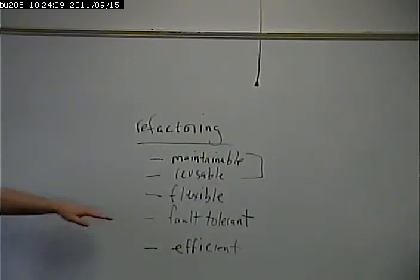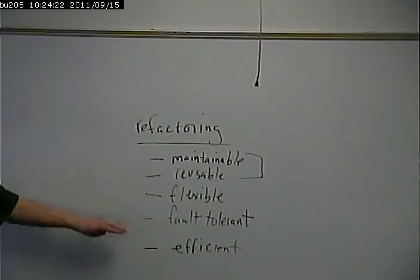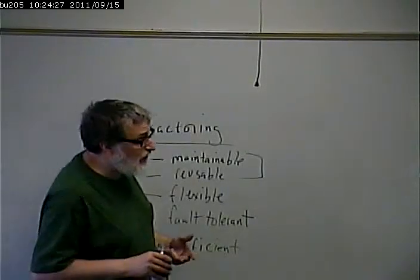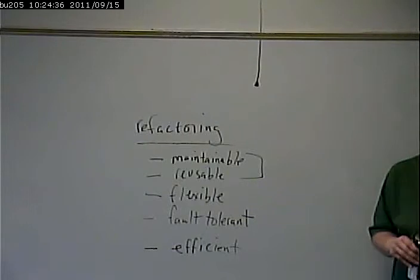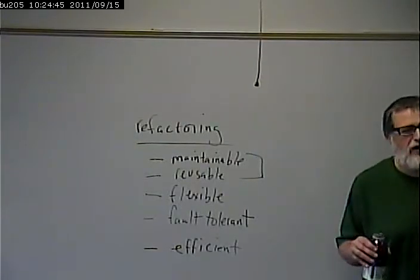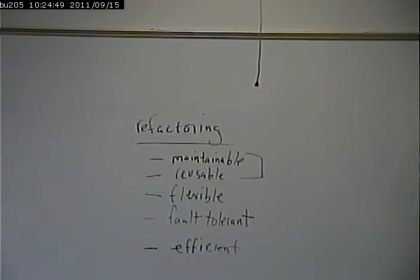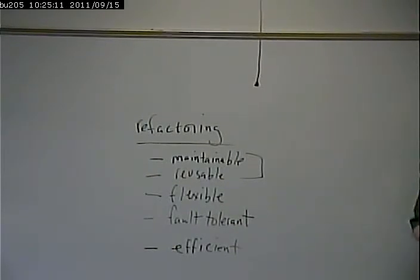A fourth item — further down on the list than you might expect — is to make code more efficient. The reason is that a lot of these other things trump efficiency. You obviously don't want your code to be inefficient, but if you spend a lot of time working on efficiency at the expense of maintainability and reusability, it's probably not a good idea. There are exceptions — some processes require quick speed — but for most standard business calculations, like calculating a shipping charge, efficiency probably isn't the top priority. Those other items trump it.